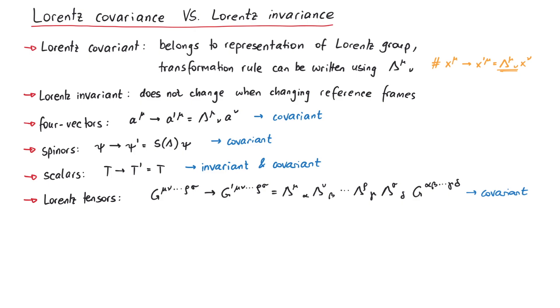By the way, if you are using the 4 vector formalism, there is a very useful method to construct Lorentz invariant quantities. As long as all Lorentz indices are contracted, the quantity is automatically Lorentz invariant.